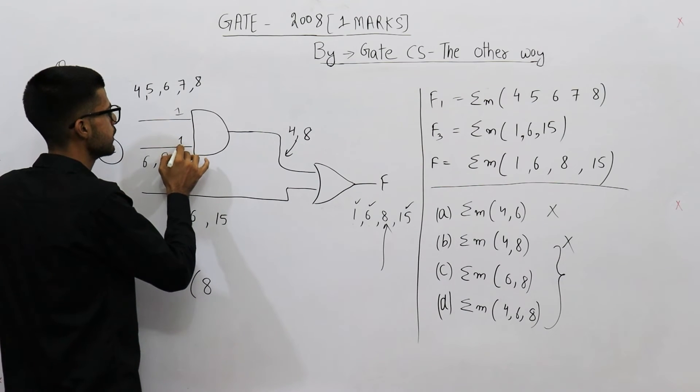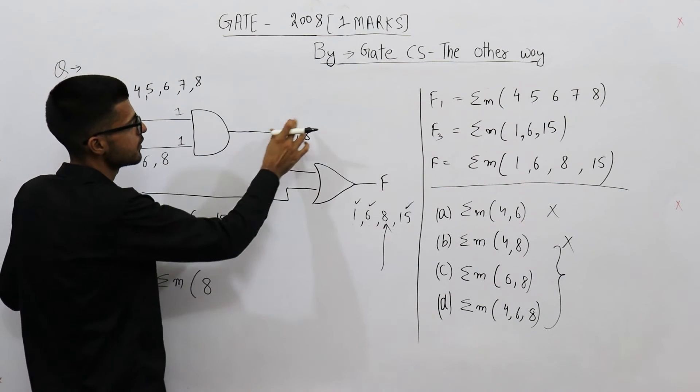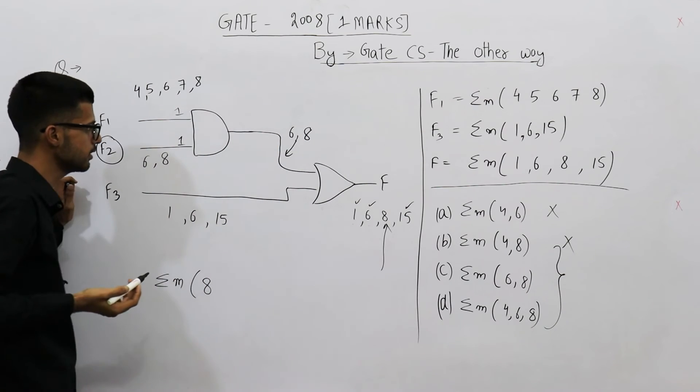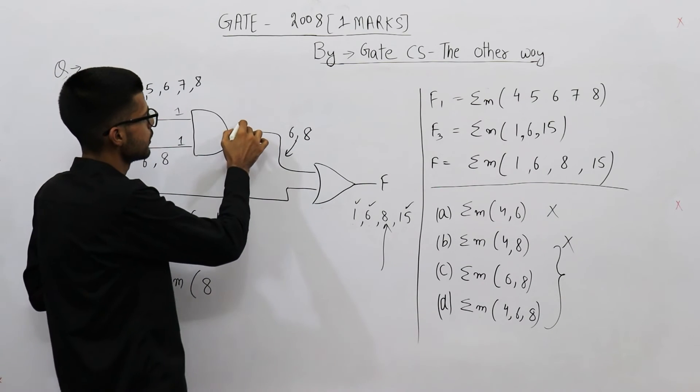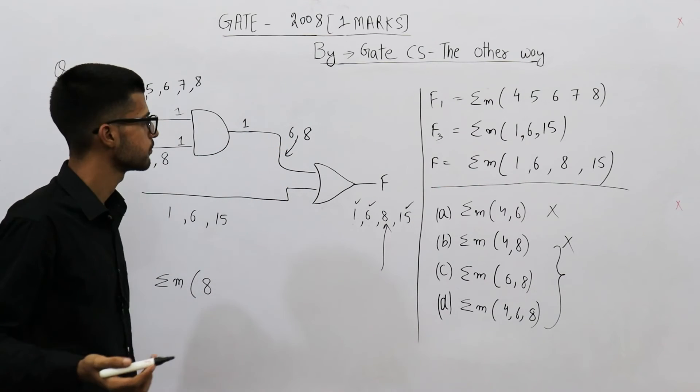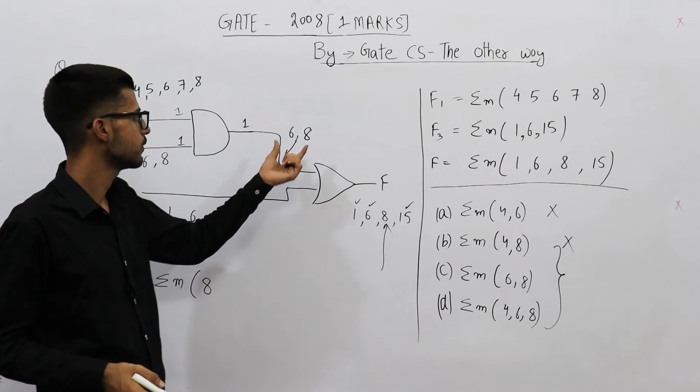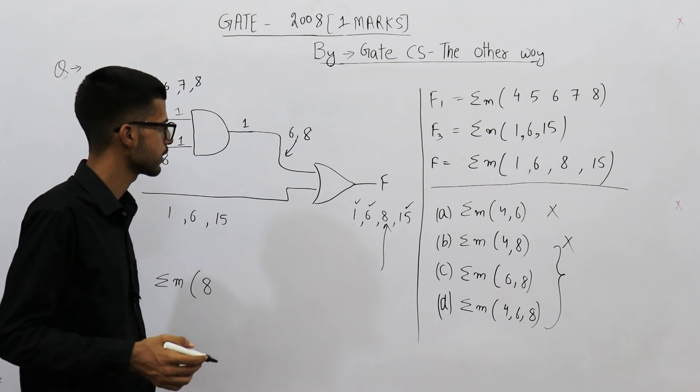When the inputs are 6, function f1 as well as function f2 both will output high. We will get a 1 here. And hence, both the inputs of this AND gate are 1. You will get 1 in the output. So this one will be 1. And I've written 6 here because on 6, you are getting an output high.